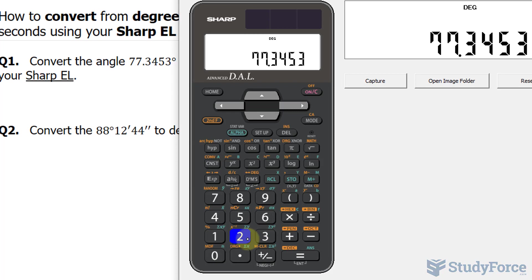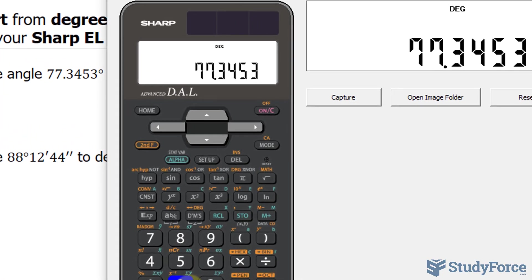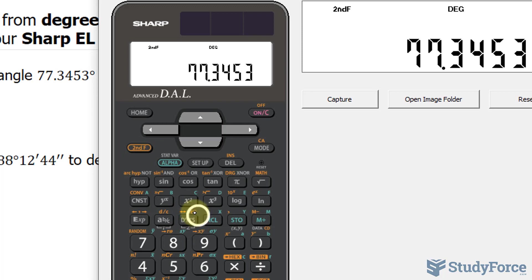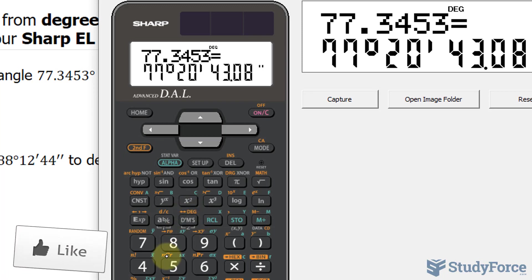Now this is in decimal degrees. If you want it in degrees, minutes, seconds, you click second and you click this button that I'm hovering around, DMS. And we end up with 77 degrees, 20 minutes, 43.08 seconds.